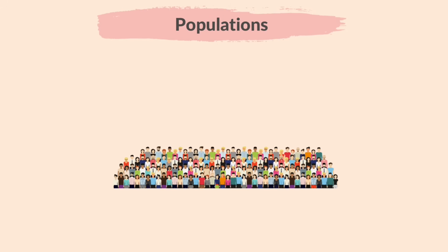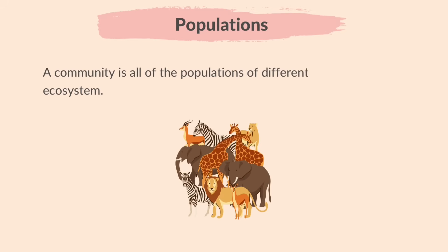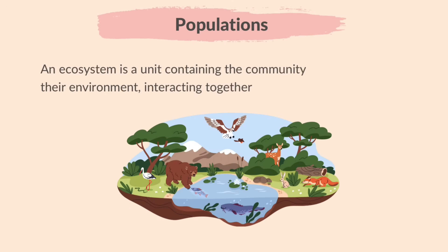Finally, let's learn about populations. A population is a group of organisms of one species living in the same area at the same time. A community is all of the populations of different species in an ecosystem. An ecosystem is a unit containing the community of organisms and their environment interacting together.